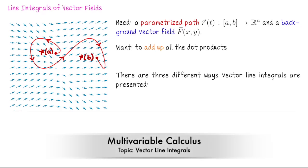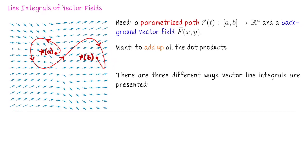In this lecture we're going to start line integrals of vector fields. In order to do this calculation we need two main objects: a parametrization of a curve C in our domain, either R2 or R3, where we have to have a clear sense of direction — a starting point and an ending point for our curve. We also need a background vector field.